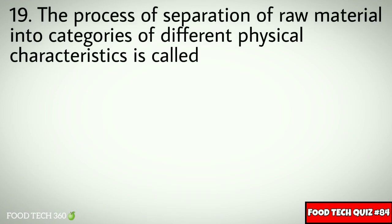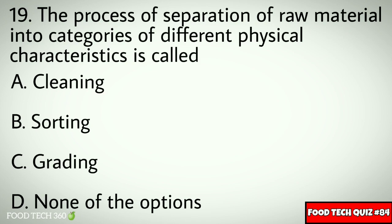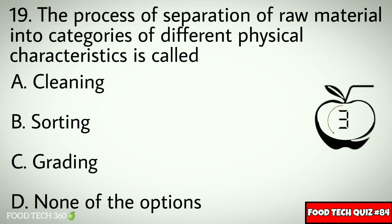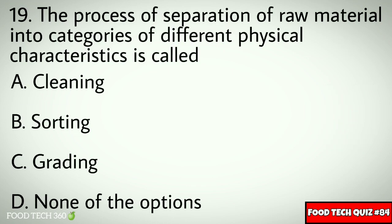Question number 19: The process of separation of raw material into categories of different physical characteristics is called — Options: A. Cleaning, B. Sorting, C. Grading, D. None of the options. Correct answer: B. Sorting.